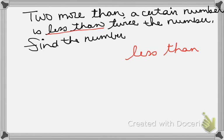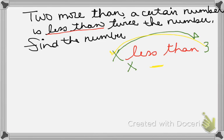Whenever you see 'less than,' it's a special one — you've got to be careful. Whatever is in front of the word 'less than' goes to the back, and whatever is in the back goes to the front. It will have a minus sign. For example, if we have 'x is less than 3': x is in front of 'less than' so x goes to the back; 3 is in the back so it goes in front of the minus sign.